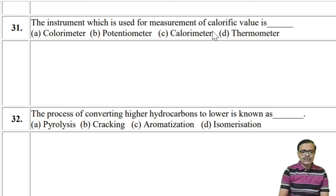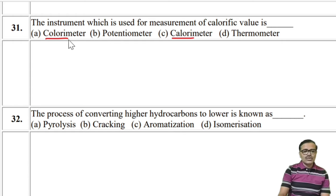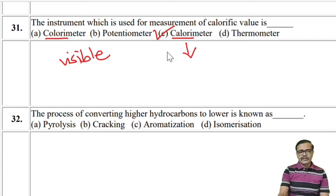The instrument used for measurement of calorific value is the calorimeter — not the potentiometer or thermometer. Note: colorimeter is for visible spectroscopy, while calorimeter measures calorific value. So calorimeter is the answer.